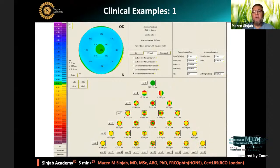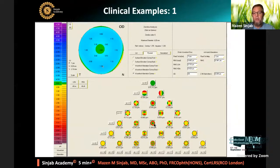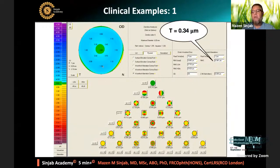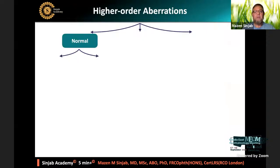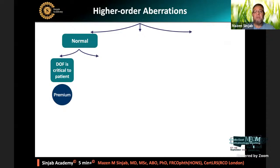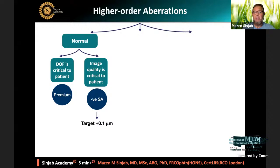Here is a clinical example. We study higher-order aberrations by clicking on N3 in the Zernike pyramid to activate the four high-order aberrations — vertical and horizontal coma, vertical and horizontal trefoil — plus spherical aberration at N4. We look at the RMS of the total high-order aberrations. In this example, it is 0.34 microns, which is normal, and spherical aberration is 0.31. If depth of focus is critical, we can implant a premium IOL; otherwise, we implant a minus spherical aberration IOL. Since the spherical aberration is plus 0.31, we can implant minus 0.20 to achieve the target.